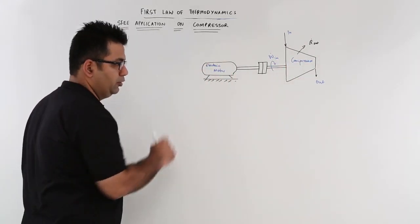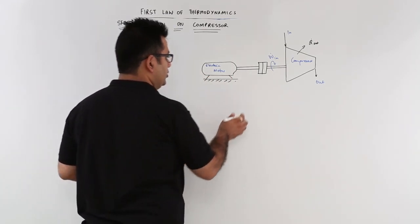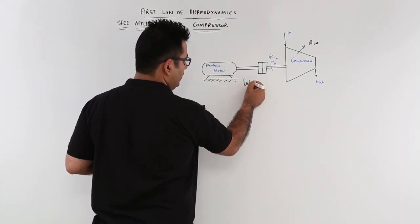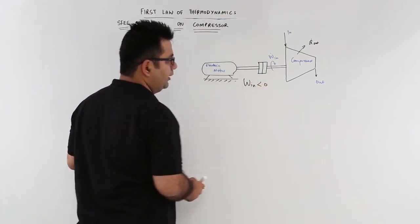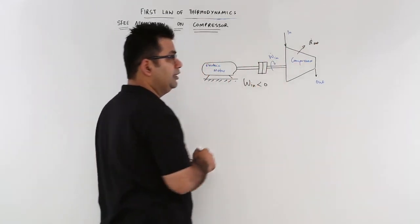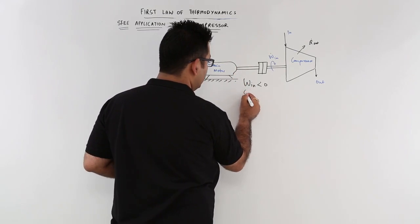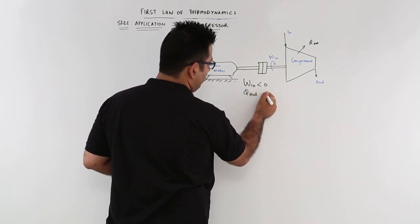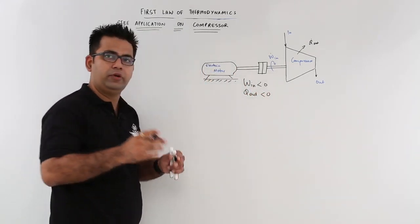So you have some work input to this compressor. When you have work input, this work input would be a negative quantity. And it is throwing out heat into the surrounding, so the heat that it throws out is also a negative quantity.